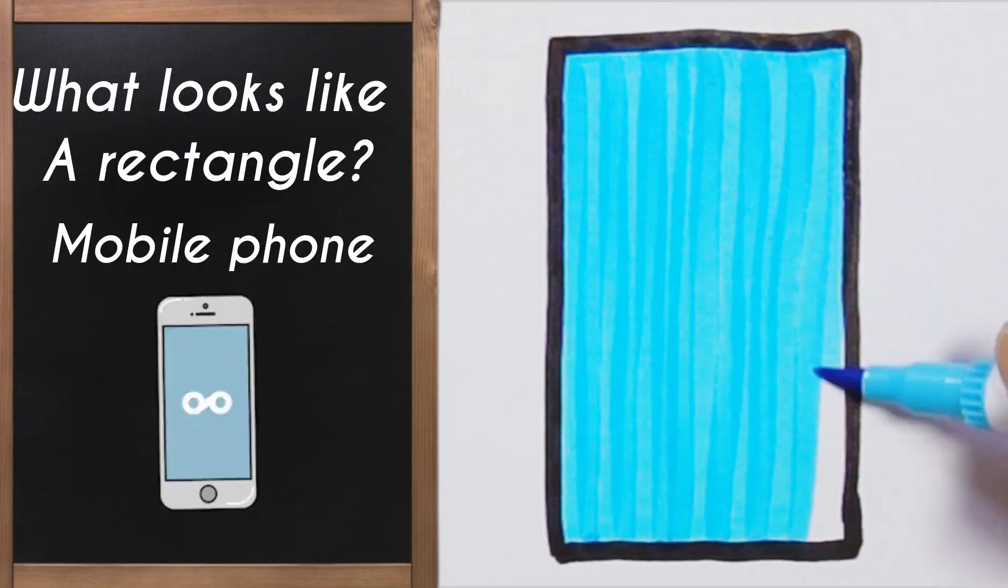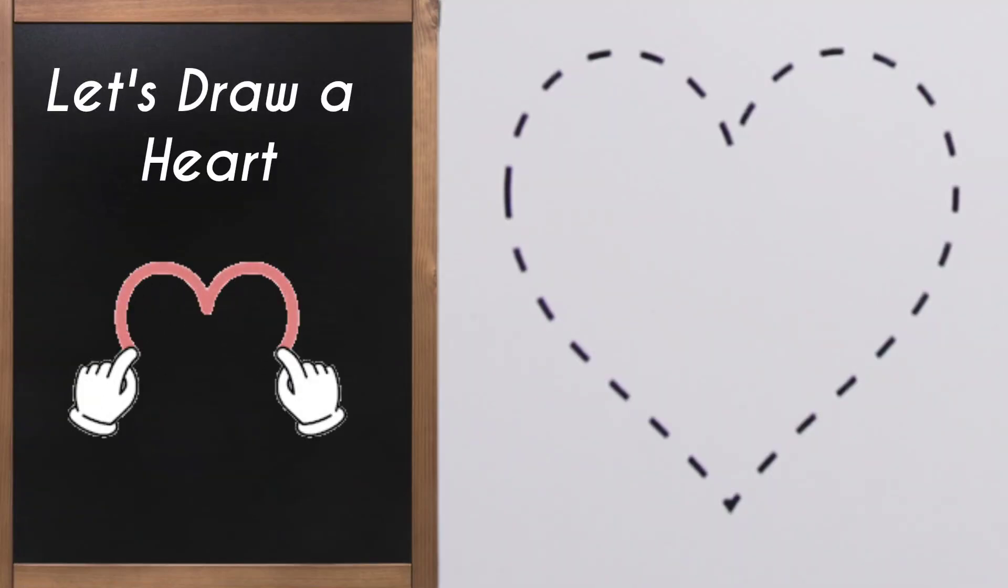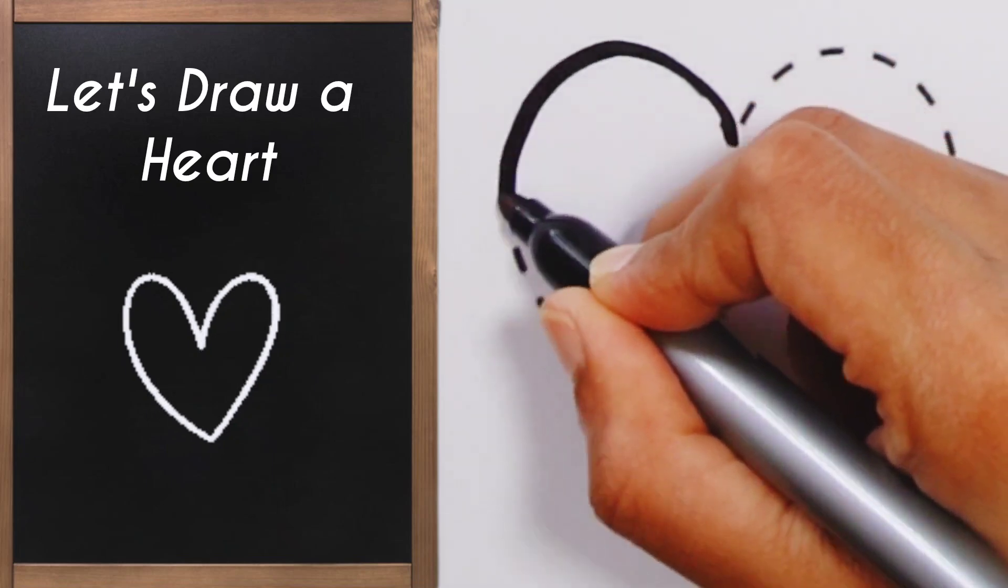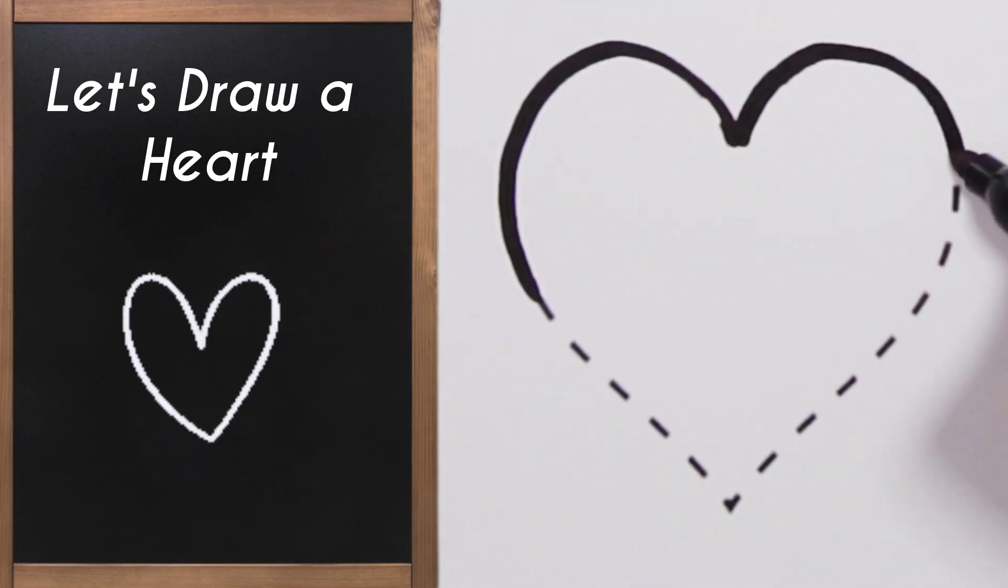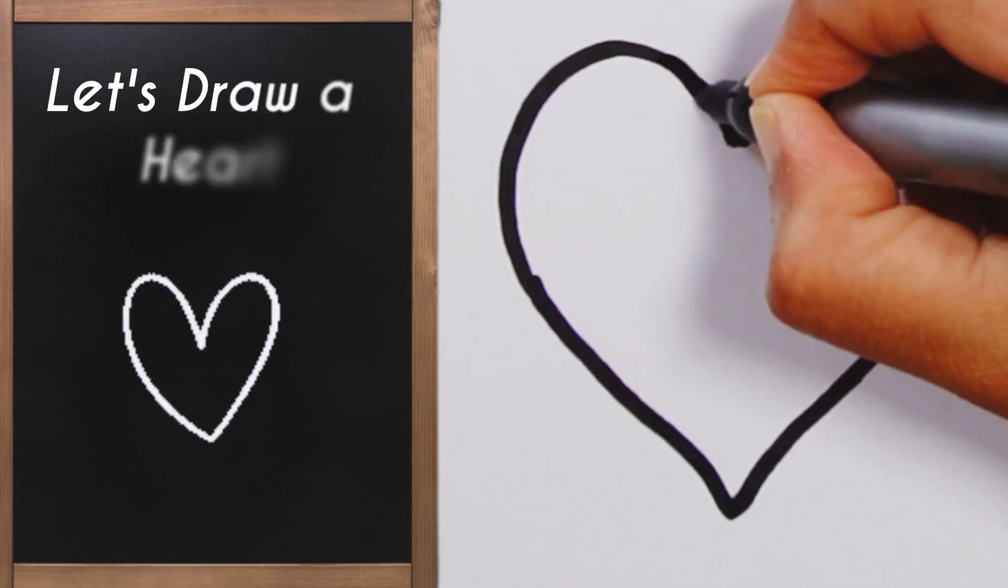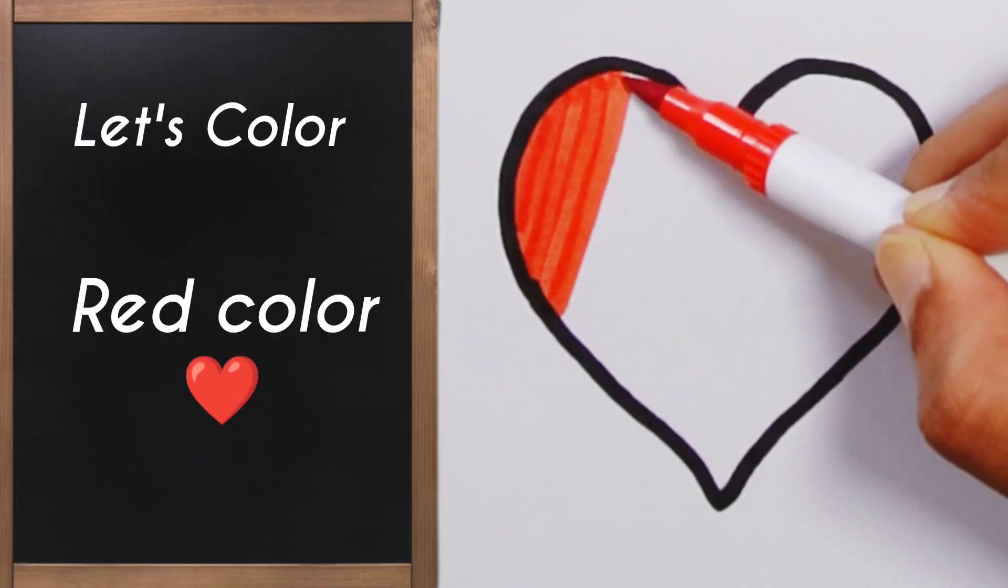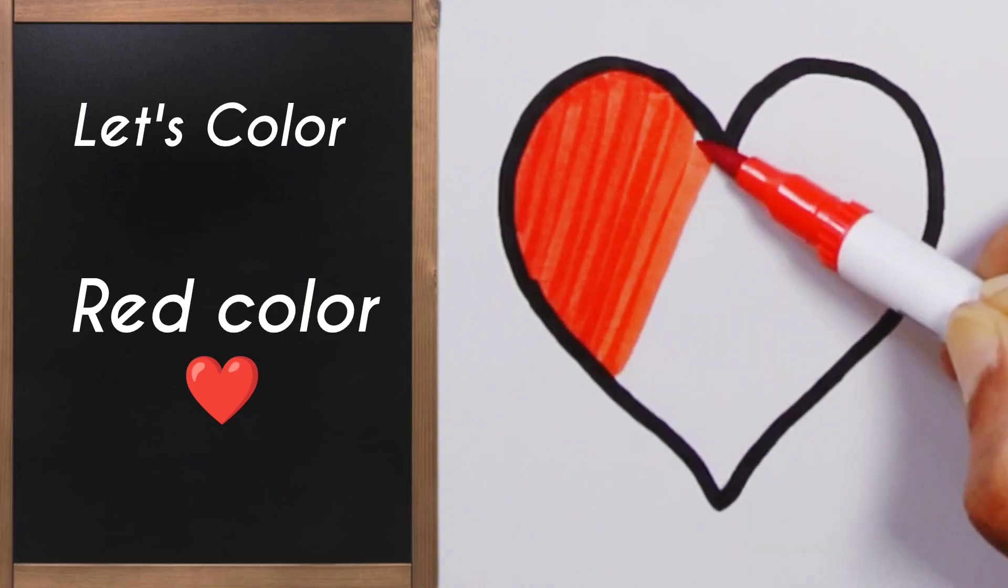...they all look like rectangles! Now let's draw a very special shape - a heart! Curve one side, curve the other, and join them at the bottom. Ta-da, a heart! A heart means love.